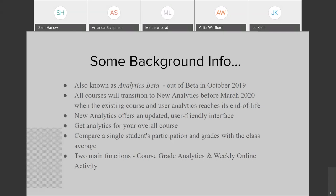Course grade analytics allows you to look at grades for assignments for the whole class, and then you can compare single students with the whole class average. You can also look at weekly online activity, which allows you to look at individual students and the whole averages for page views and participation. For each of these, we're going to focus on the charts, but you can also switch over to data tables.